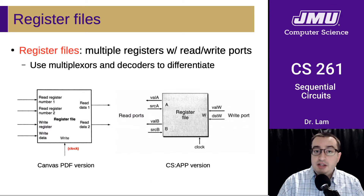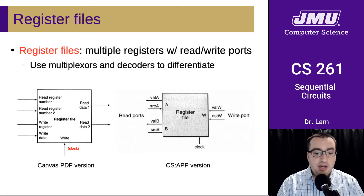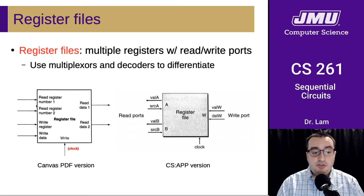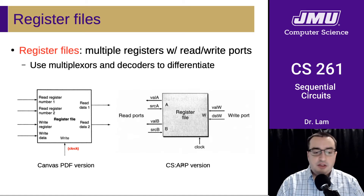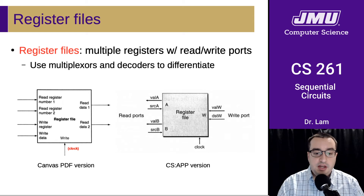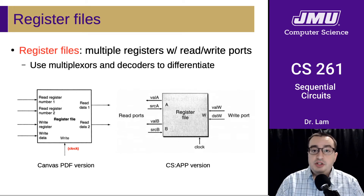This is a way of abstracting a register file so you don't have to look at all the details inside. I want to highlight that this is slightly different between the version in the PDF distributed on Canvas, which is from a different textbook, and the version from your textbook. Here we have the register numbers for reading coming in, the writing information coming in, all the inputs on the left, the read outputs on this side, and the clock signal coming in from the bottom. The one in your textbook is the same, just drawn slightly differently — inputs and outputs for reading on one side, writing stuff on the other. It's essentially the same component, just a different layout. This abstraction combines a bunch of registers together with multiplexers and decoders to implement the register file.